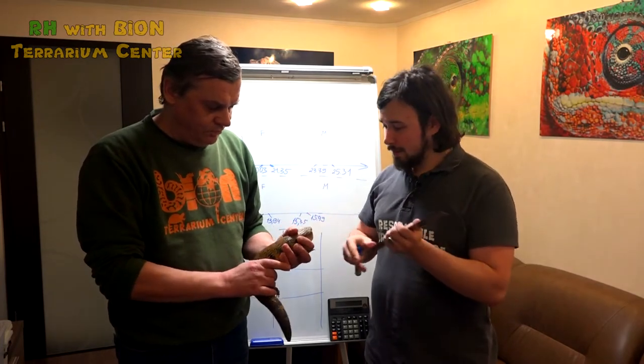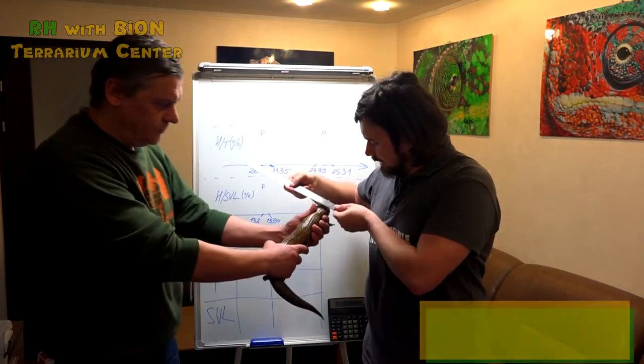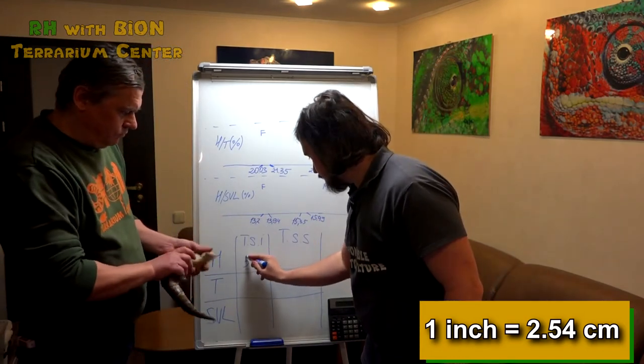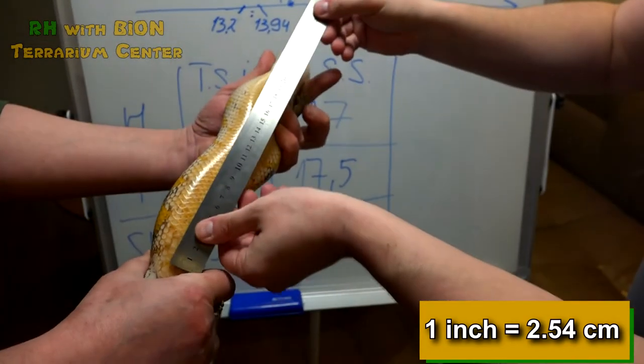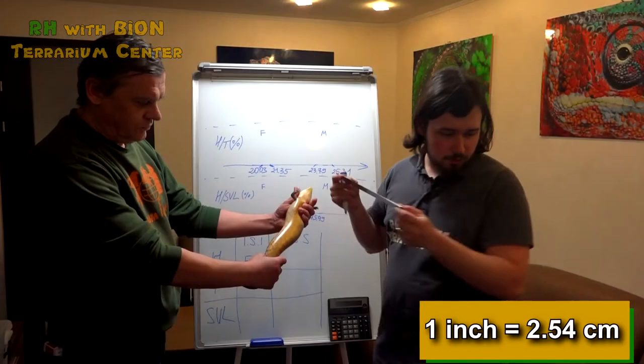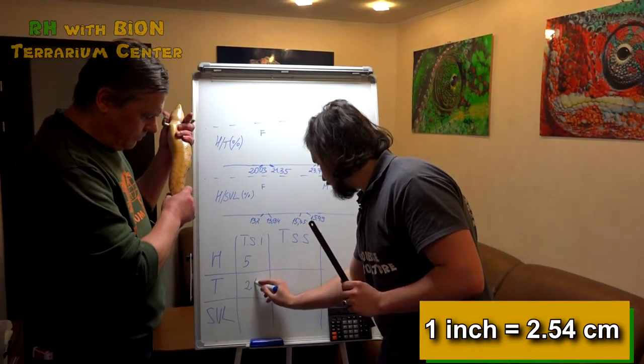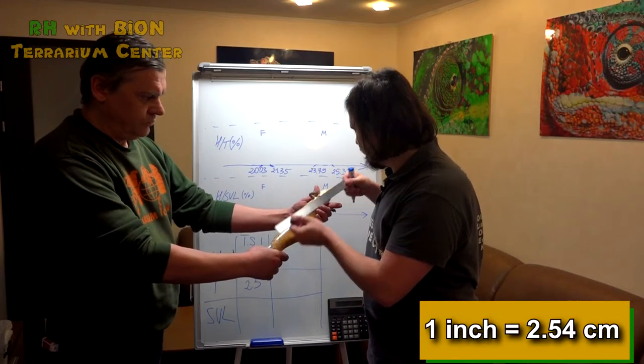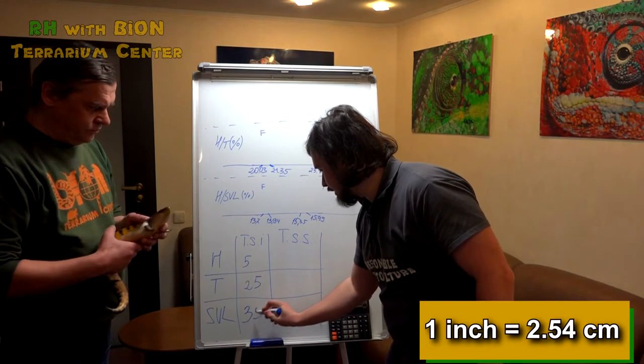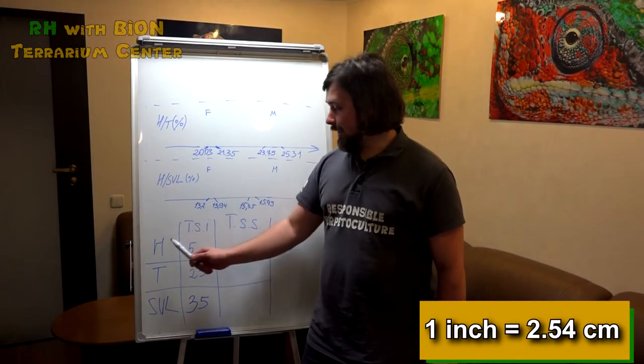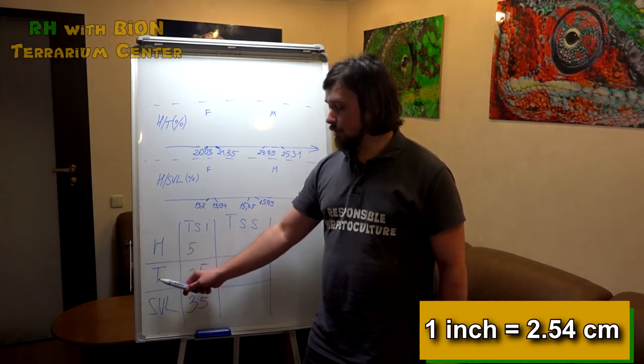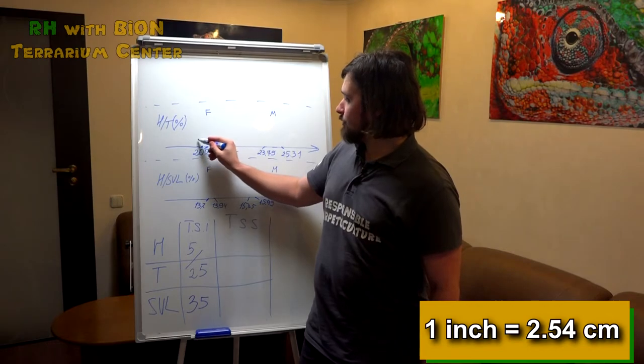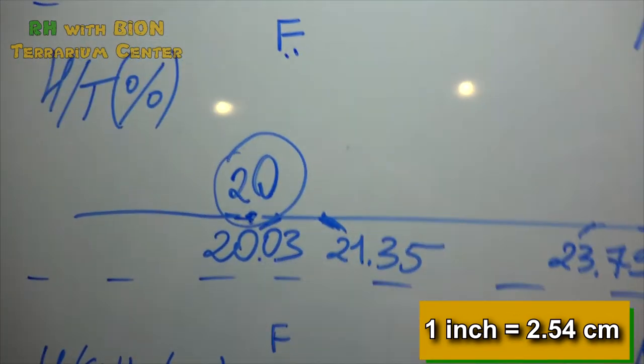This is Tiliqua scincoides intermedia and we are going to make first measurements. So the head width, it's five centimeters, approximately five centimeters, it's enough. Then distance between hind and forelegs, hind and forelimbs, it's about 25 centimeters. Let's make some calculations. We divide head width, five, by distance between legs, 25, so like this, and we got 20, which goes here indicating that this is a female.